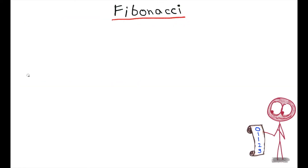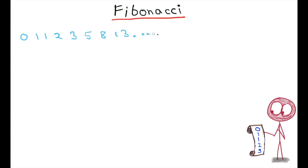Now let's take a problem in which we have to find the nth Fibonacci number. The Fibonacci numbers are the numbers in the following sequence: 0, 1, 1, 2, 3, 5, 8, 13, and so on.